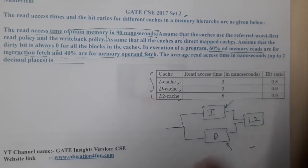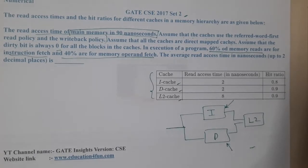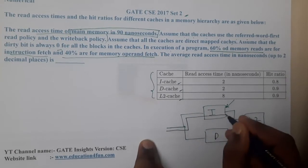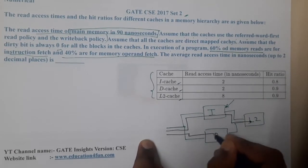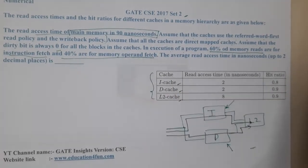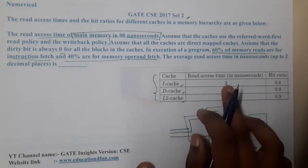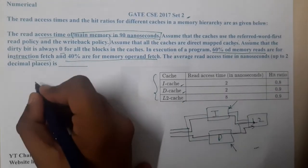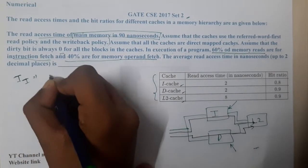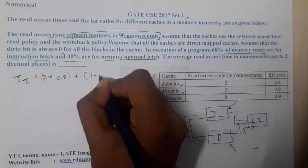There are two paths here. One path goes through the I-cache, and the other goes through the D-cache. We will individually calculate the time for each path and then combine them using the given percentages. For instruction fetch, it takes 2 nanoseconds with a hit ratio of 0.8, so T_i = 2×0.8 + 0.2×...